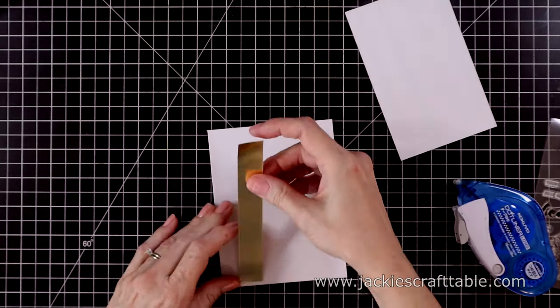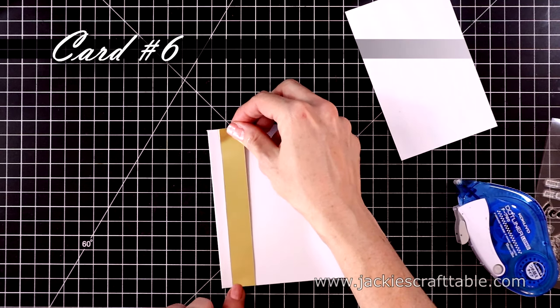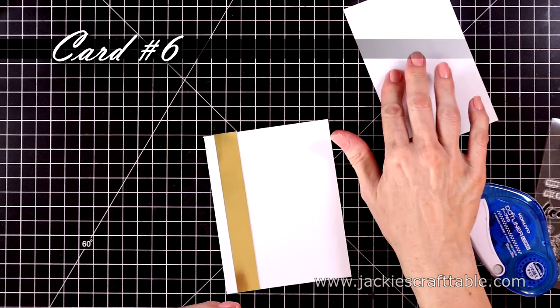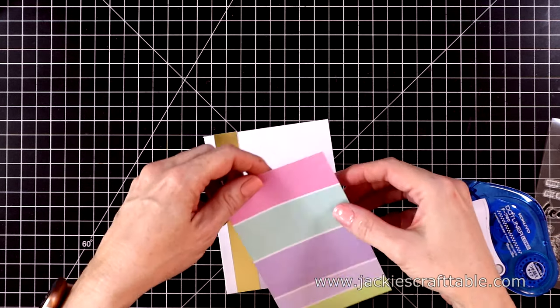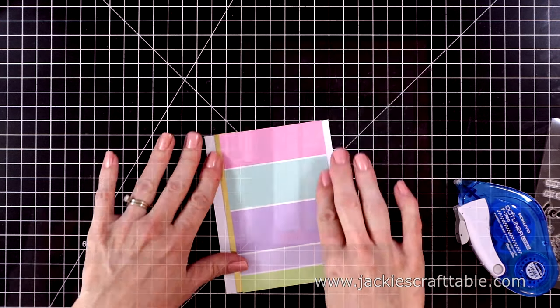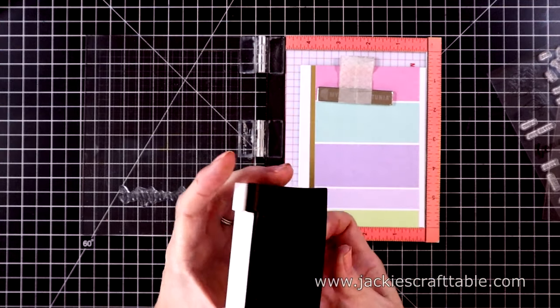For my last card, I'm going to attach a piece of the foiled cardstock on the side of my card base. I cut down another piece of pattern paper. I really love this one. And I'll put that on the side of the gold paper.